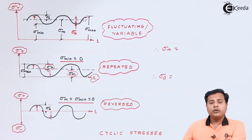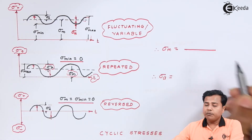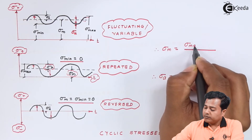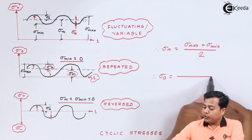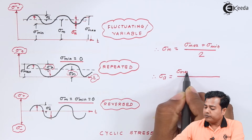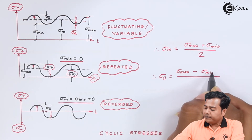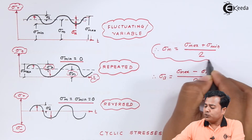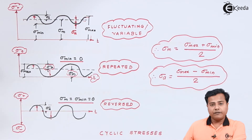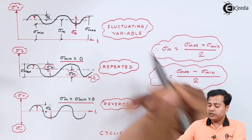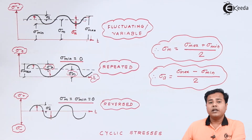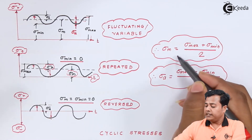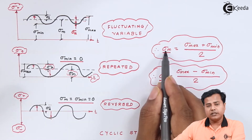The empirical relations are: mean stress σ_mean = (σ_max + σ_min) / 2, and amplitude stress σ_a = (σ_max − σ_min) / 2. These two important factors — mean stress and amplitude stress — apply to fluctuating variable loads, repeated loads, and reverse loads, and all such stresses fall under the category of cyclic stresses.